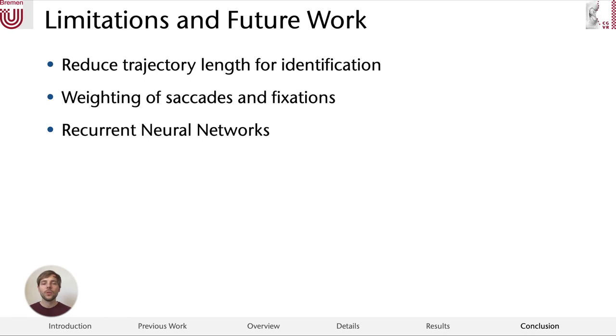For future work, we would like to decrease the number of training and testing samples needed even more to make the identification faster. Also, the weighting from the predictions of the saccades and fixations was done by averaging in our work. There might be a better way to do it and also consider which part of the trajectory the saccade or fixation belongs to. Last, recurrent neural networks seem to be a promising method when no feature engineering steps would be needed.